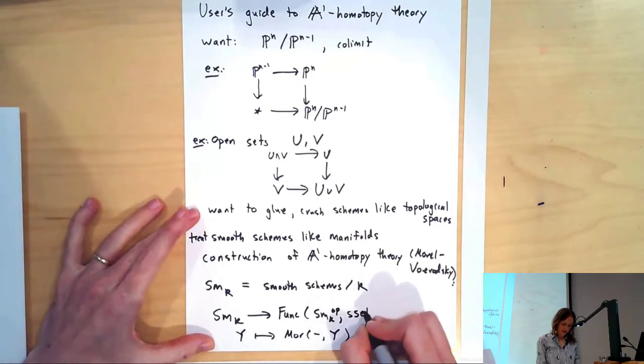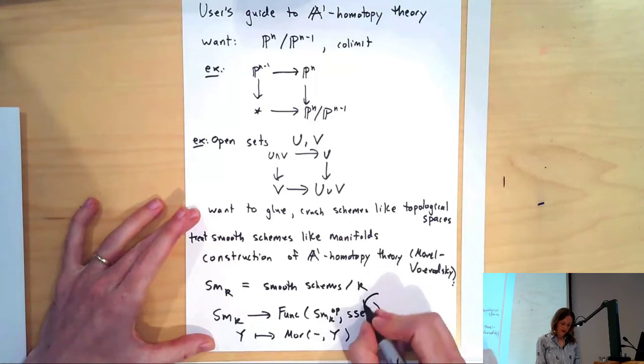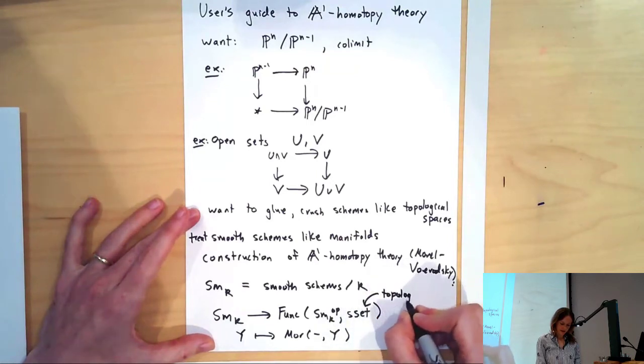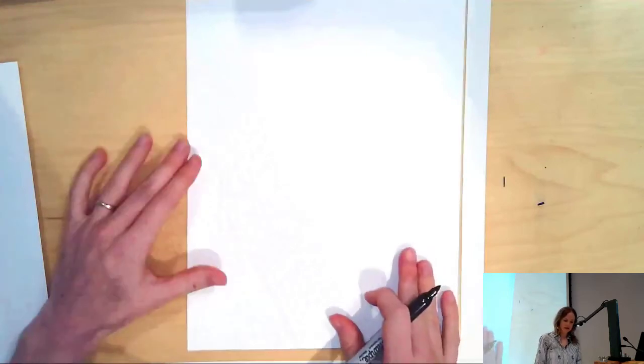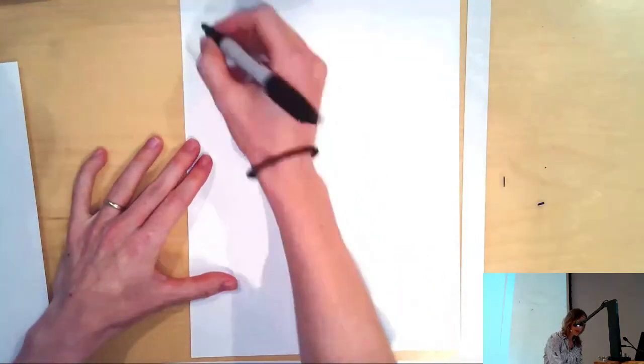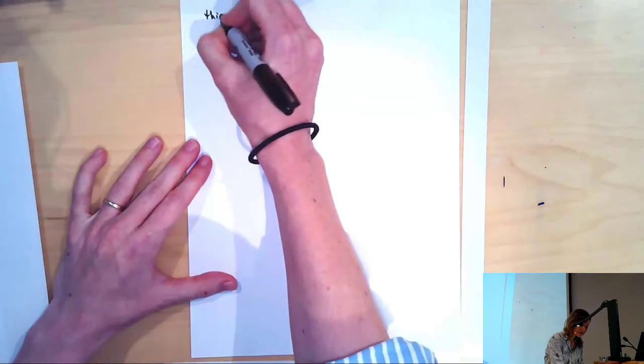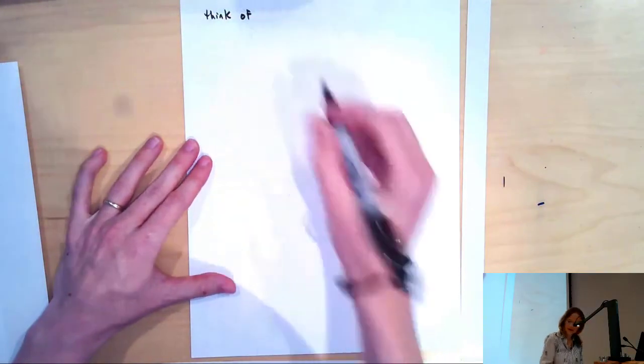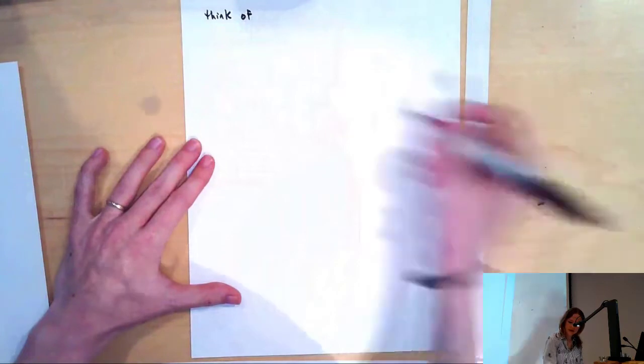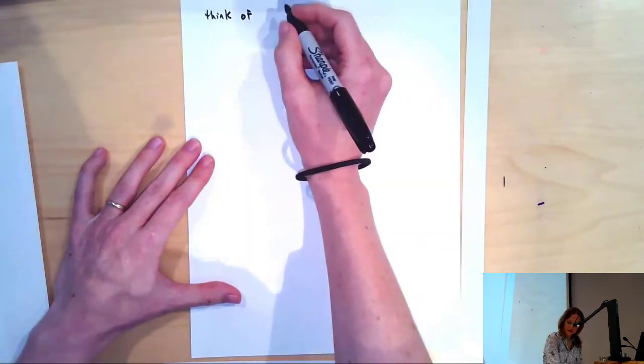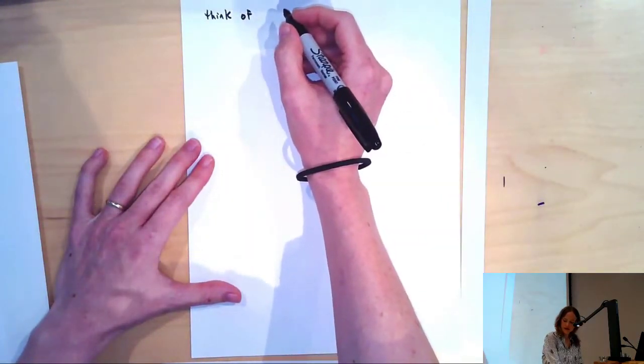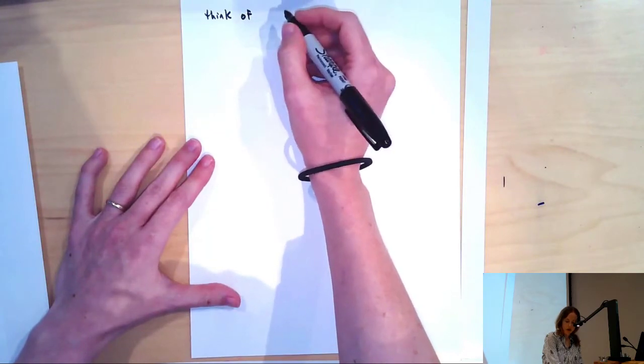We're going to want these co-limits to have nice properties, like if you replace the things you take the co-limit of with equivalent objects, you want to get something equivalent back. So we're going to want to take homotopy co-limits.